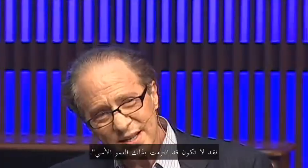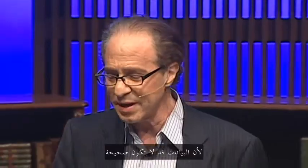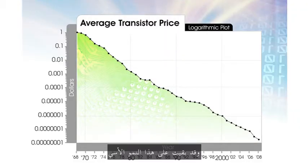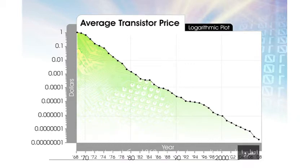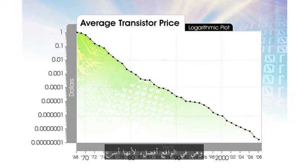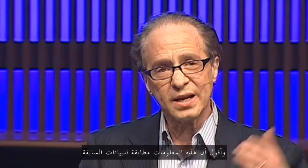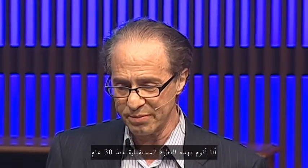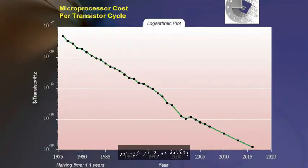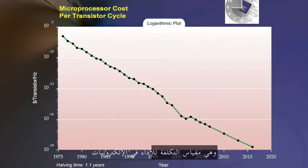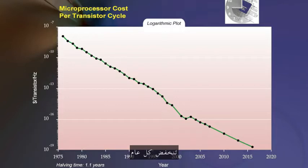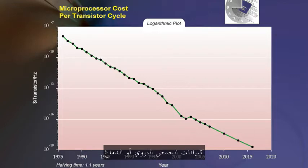Maybe it kind of didn't stay on this exponential progression — I was a little nervous because maybe the data wouldn't be right. But I've done this now for 30 years and it has stayed on this exponential progression. You could buy one transistor for a dollar in 1968; you can buy half a billion today — and they're actually better because they're faster. The cost of a transistor cycle, a measure of the price performance of electronics, comes down about every year. That's a 50% deflation rate, and it's also true of DNA data or brain data.